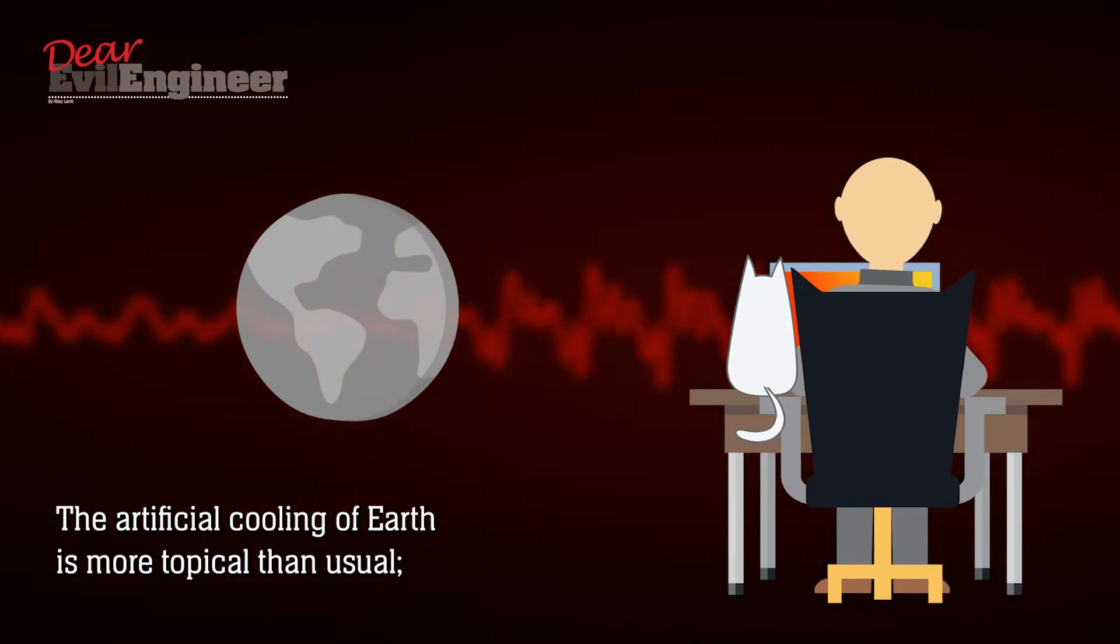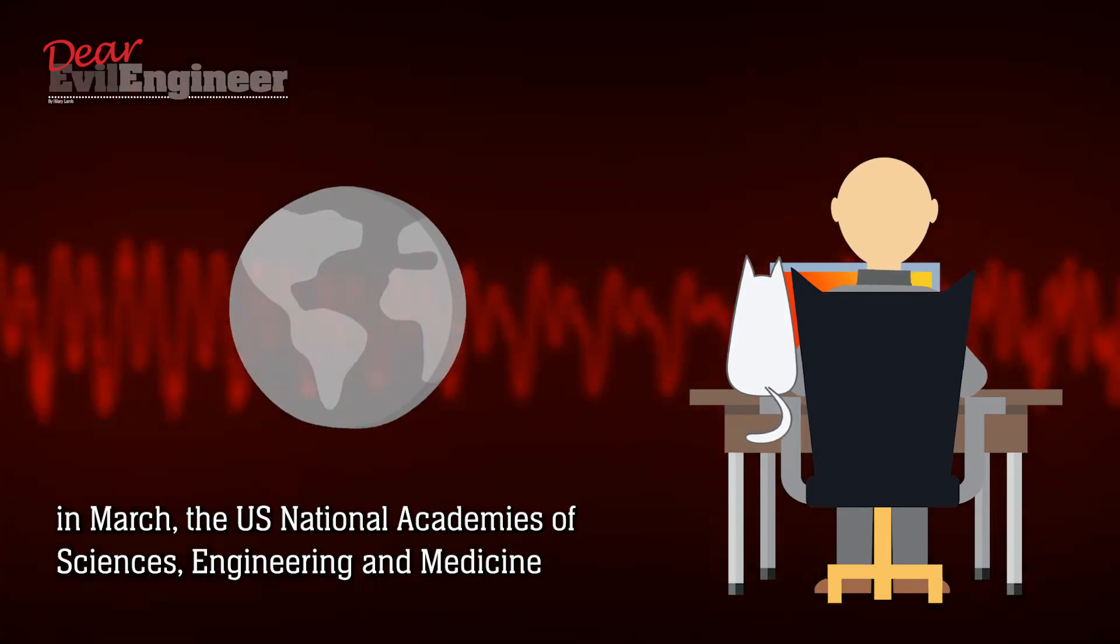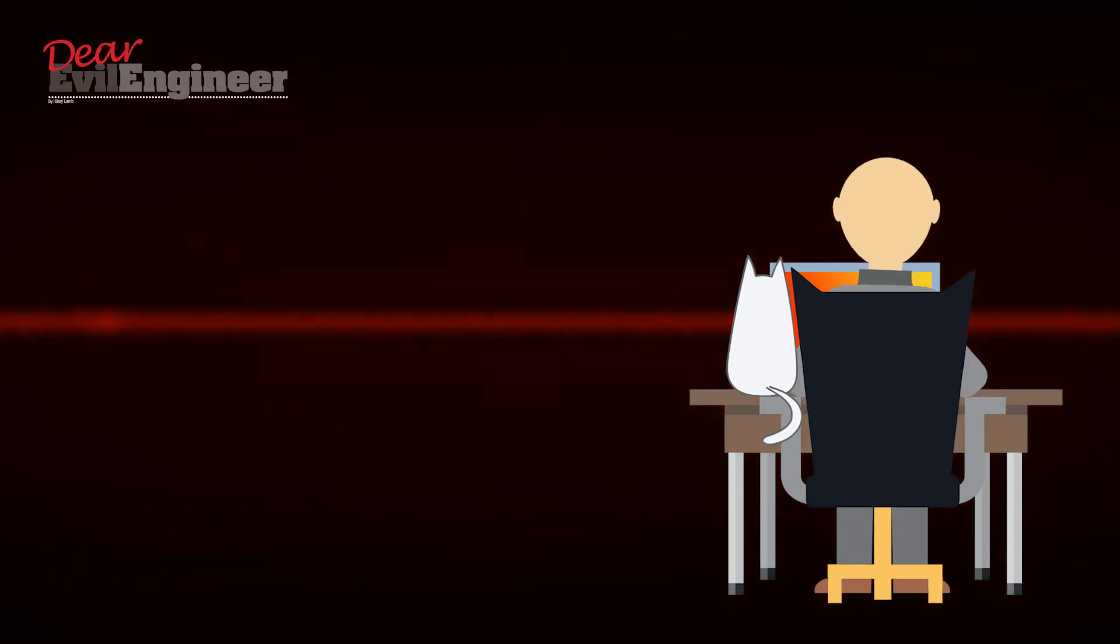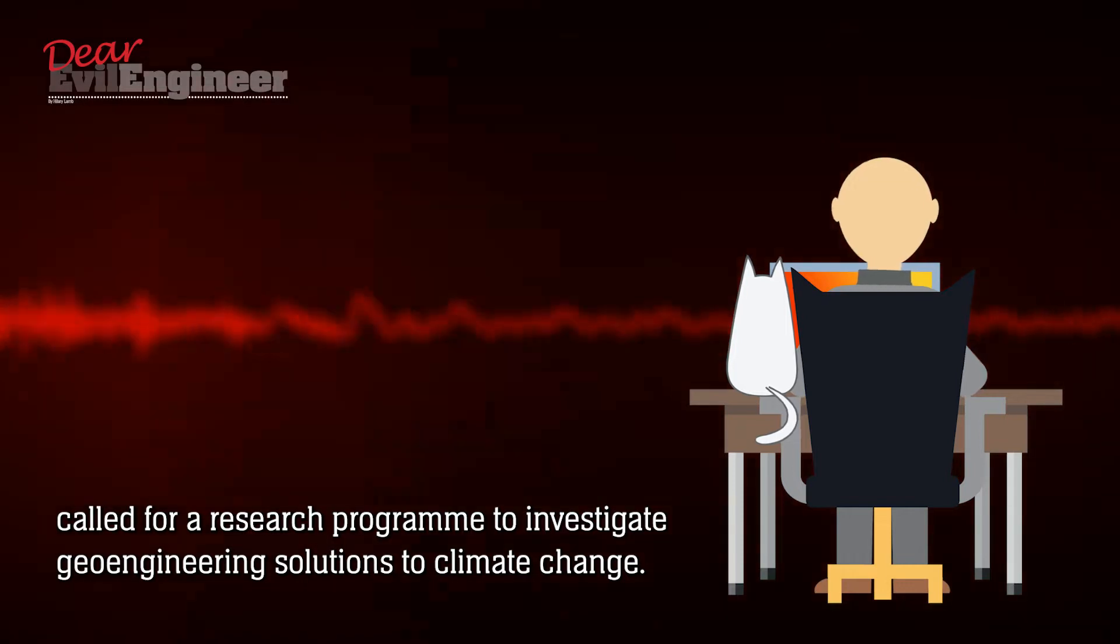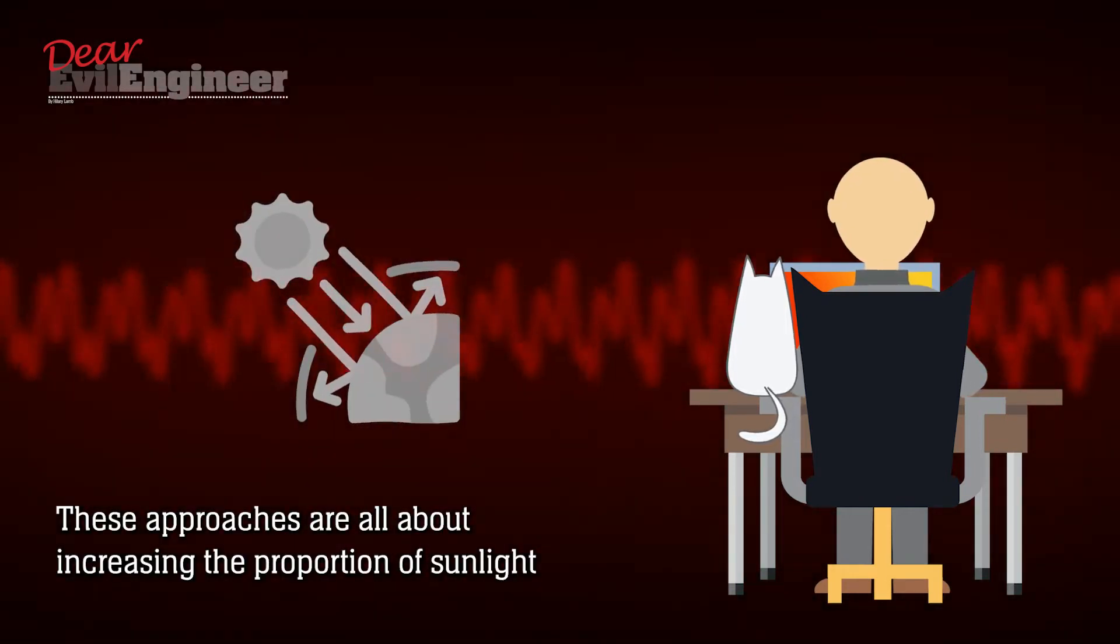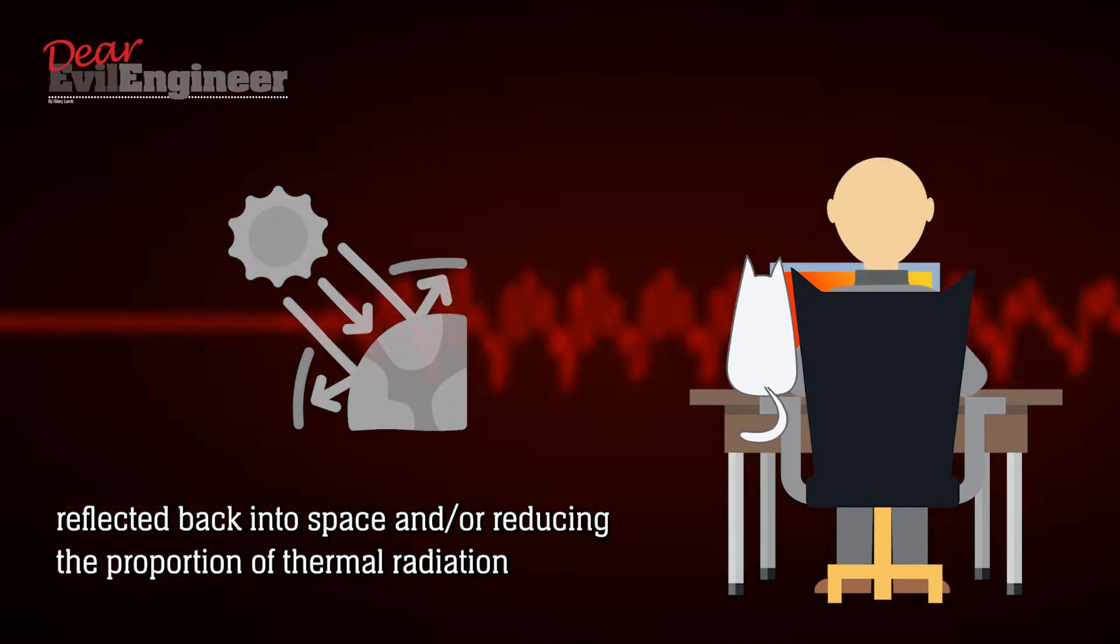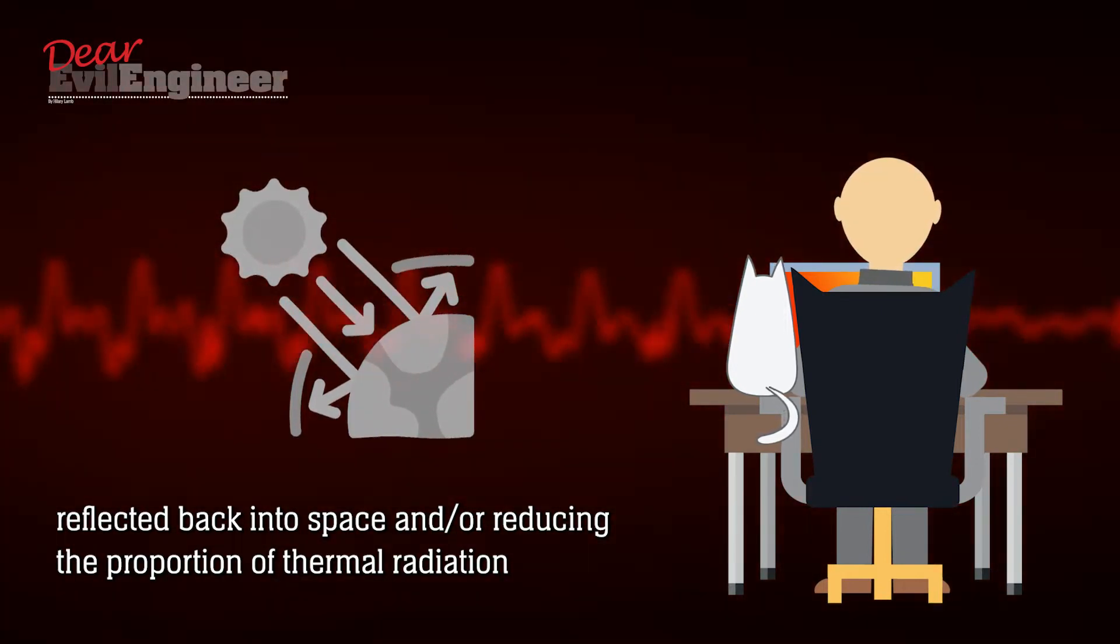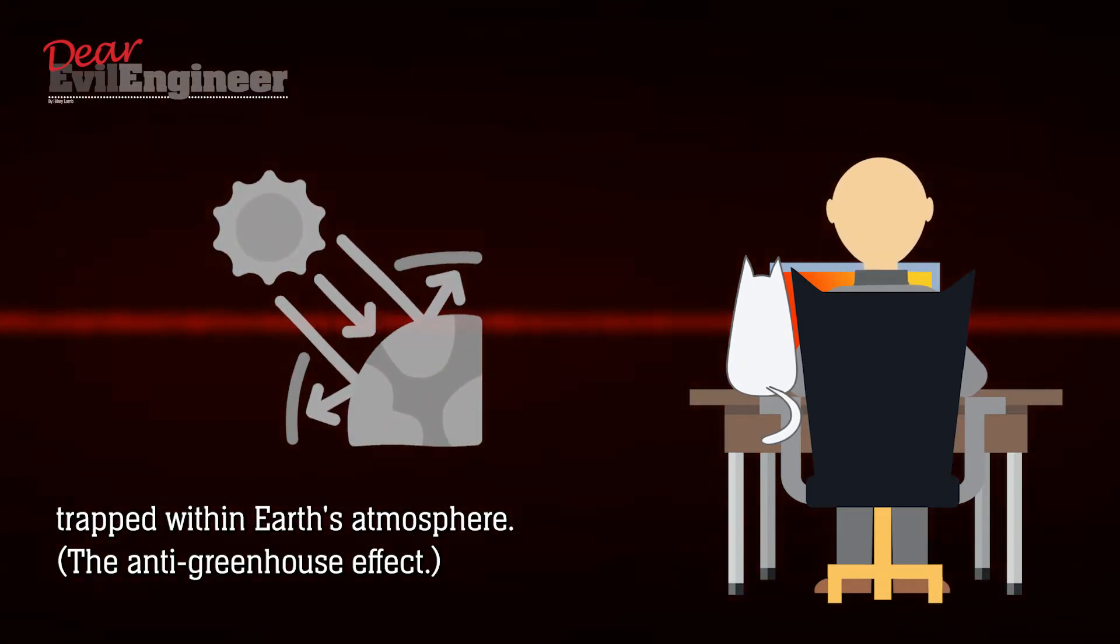The artificial cooling of Earth is more topical than usual. In March, the U.S. National Academies of Sciences, Engineering and Medicine called for a research program to investigate geoengineering solutions to climate change. These approaches are all about increasing the proportion of sunlight reflected back into space, and or reducing the proportion of thermal radiation trapped within Earth's atmosphere, the anti-greenhouse effect.